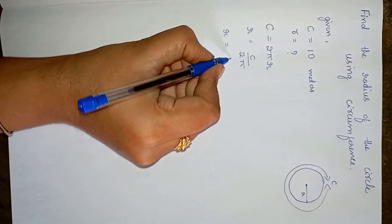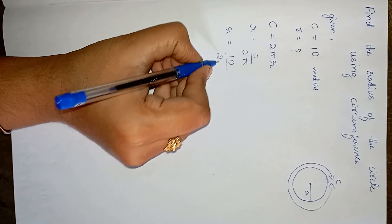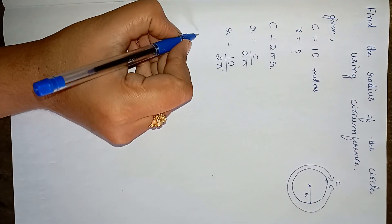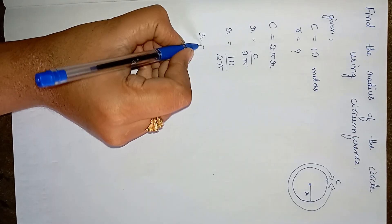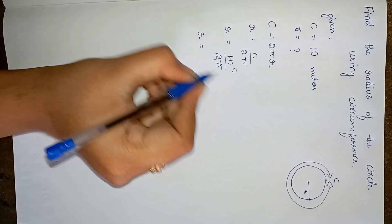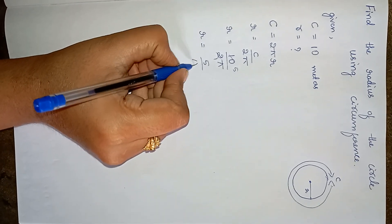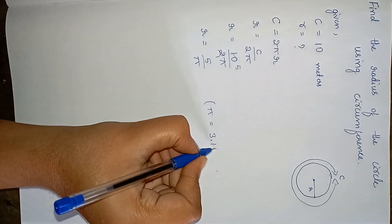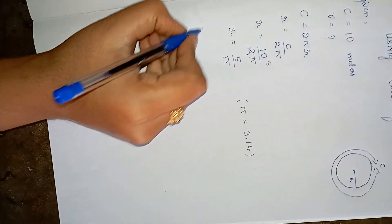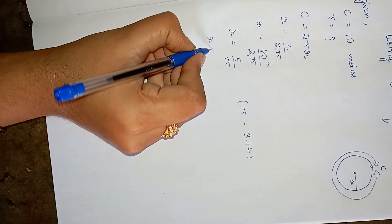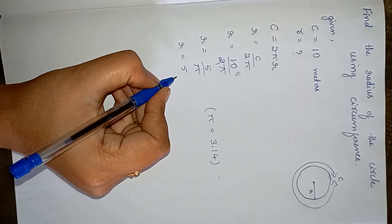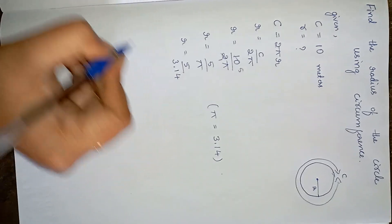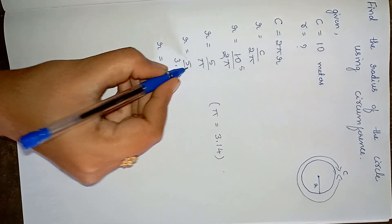C is equal to 10, so R is equal to 10 divided by 2π. That simplifies to 5 divided by π. We know that π is a constant equal to 3.14, so R is equal to 5 divided by 3.14.